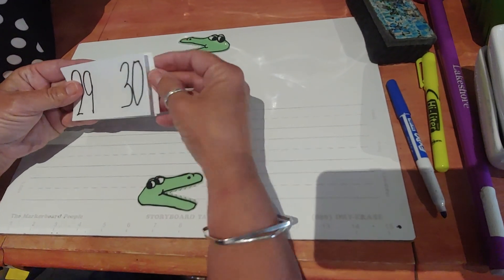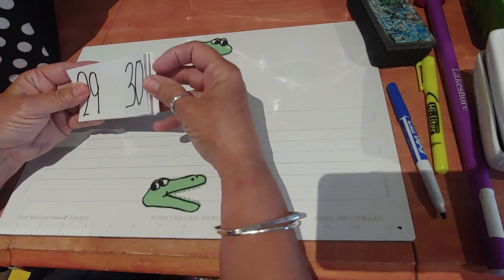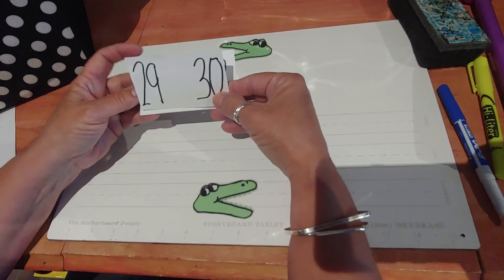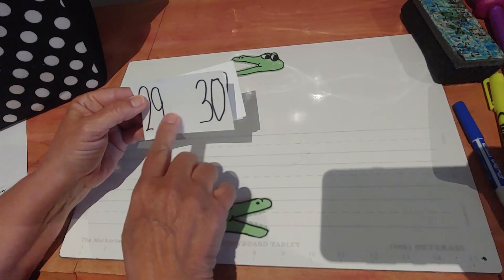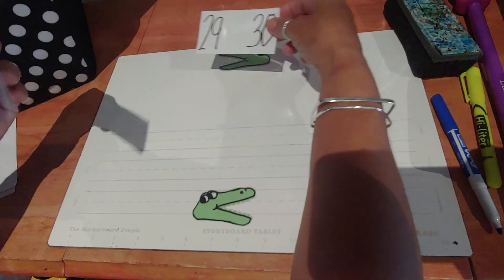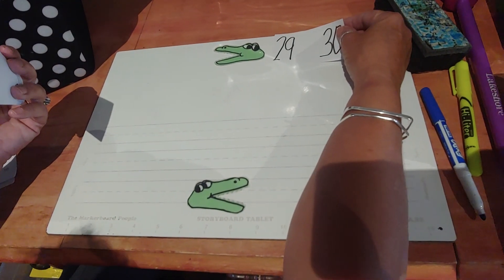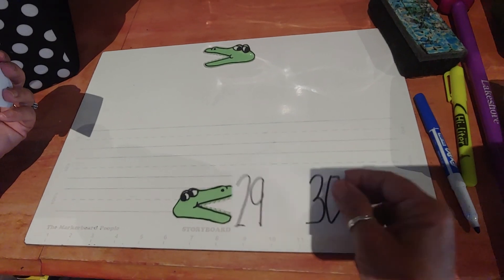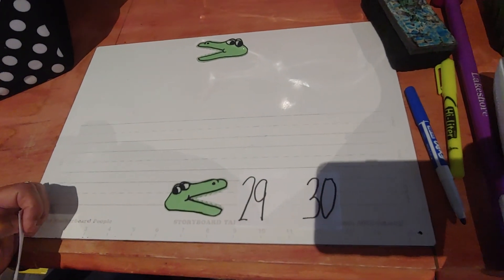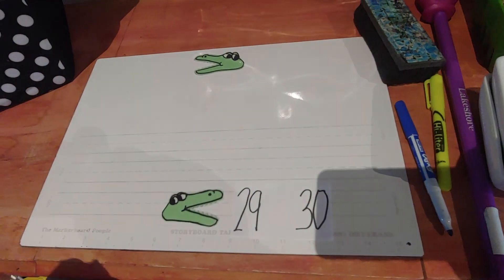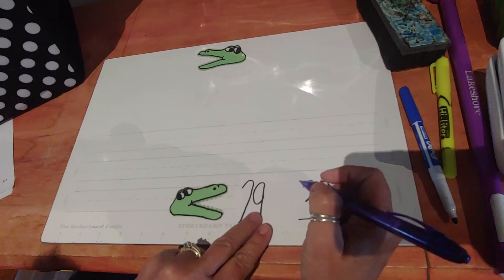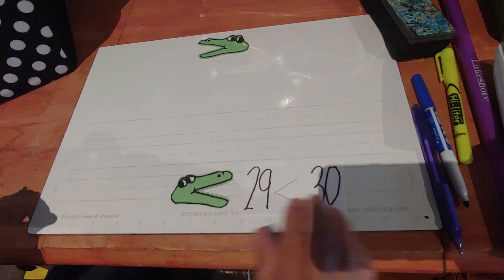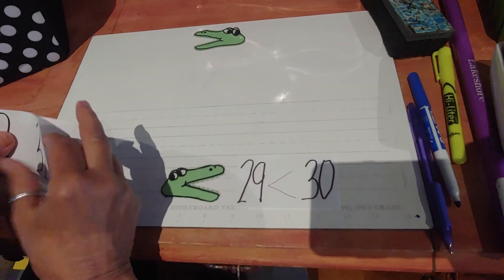Okay, so I have 29 and 30. So we start on this side here. 29 is what to 30? 29 is less than 30. So does it go with this alligator, or does it go with this alligator? It goes with this one, because if we were to draw our less than sign, it would go like that, just like the alligator's mouth. So that's one card for the bottom alligator.